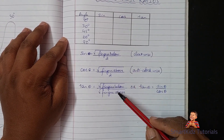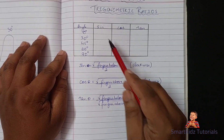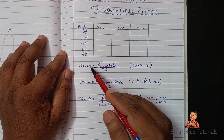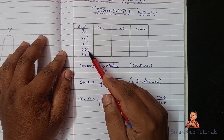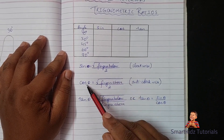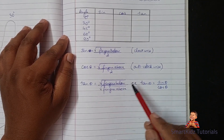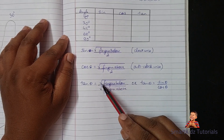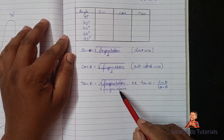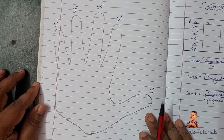There are three formulas you will be using to fill up the table. For sine theta: square root of fingers below, upon 2. For cos theta: square root of fingers above, upon 2. For tan theta: you can either use sine theta upon cos theta, or square root of fingers below upon square root of fingers above.